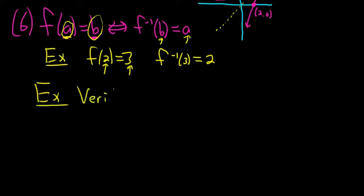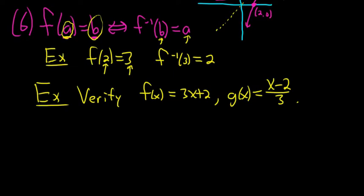Verify that f(x) = 3x + 2 and g(x) = (x - 2)/3 are inverse functions. So to do that, we have to compute f(g(x)) and g(f(x)). And we have to make sure that we get x in both cases.